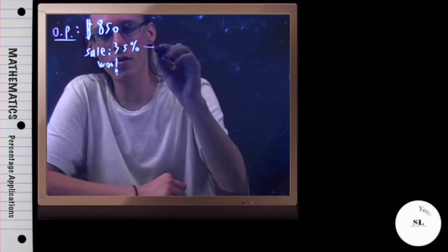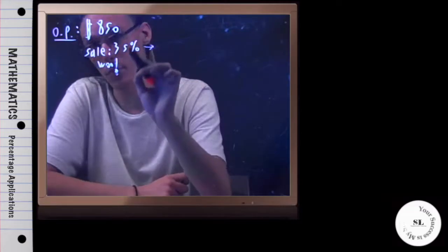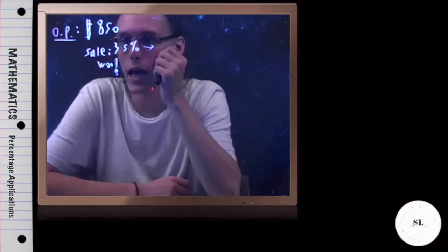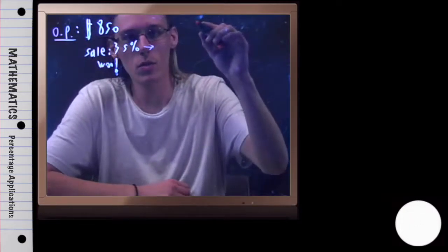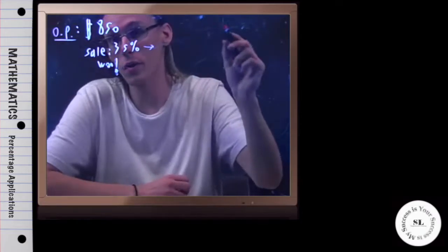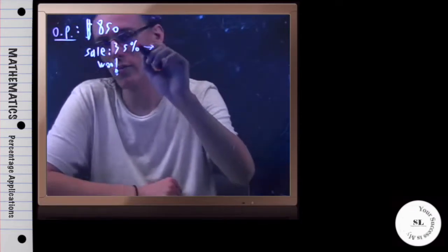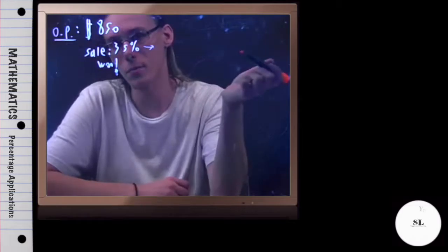So first, we're going to convert the sale percentage from a percent to a decimal. Now recall that when you go from a decimal number to a percent, you move two hops to the right. But we're going backwards, we're going from a percent to a decimal, so we need to move two hops to the left.